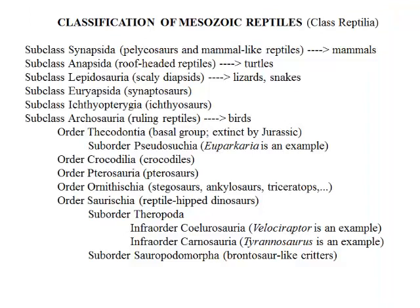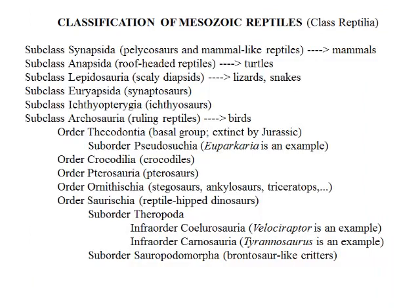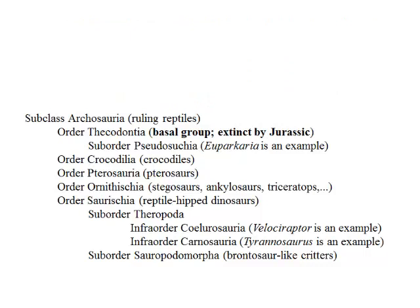Here is a classification scheme of Mesozoic reptiles. There were six subclasses: the Synapsids gave rise to mammals, so that's not a likely group to have given rise to birds. The Anapsids gave rise to turtles. The Lepidosaurians gave rise to lizards and snakes. The Euryapsids gave rise to plesiosaurs, which went extinct. The Ichthyopterygians gave rise to Ichthyosaurs, and they also went extinct. So five of the six subclasses are unlikely to have given rise to birds — which leaves the Archosaurs.